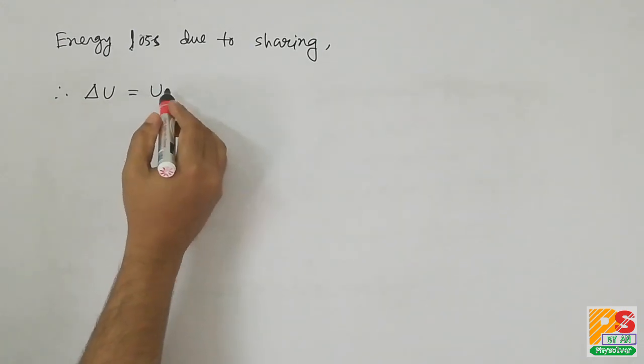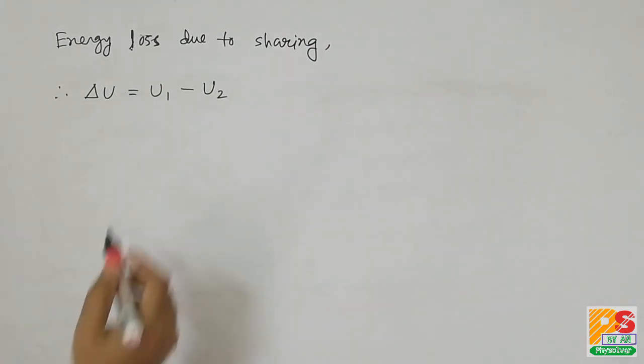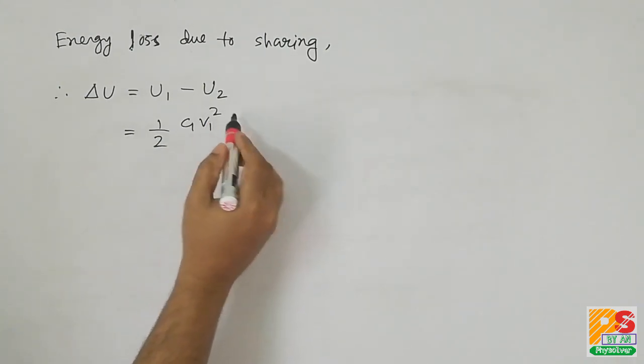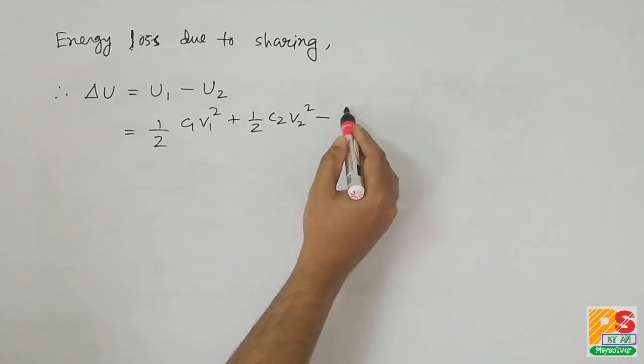Now to find the energy loss we have to subtract U2 from U1. I call it delta U. Put in the values.